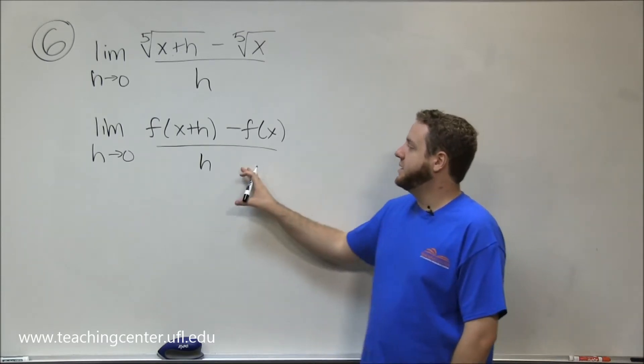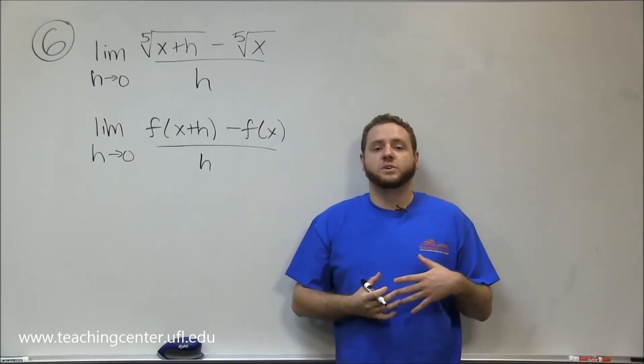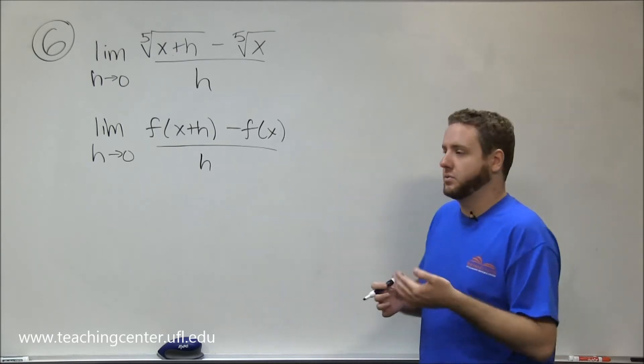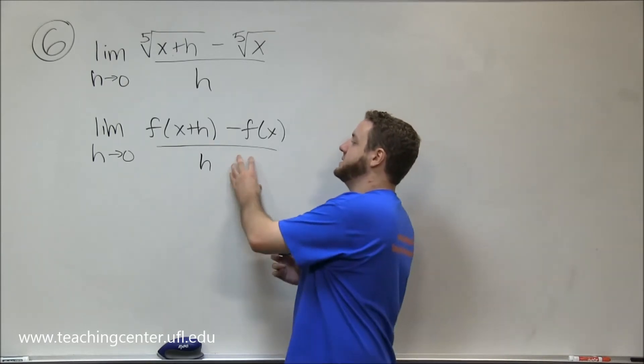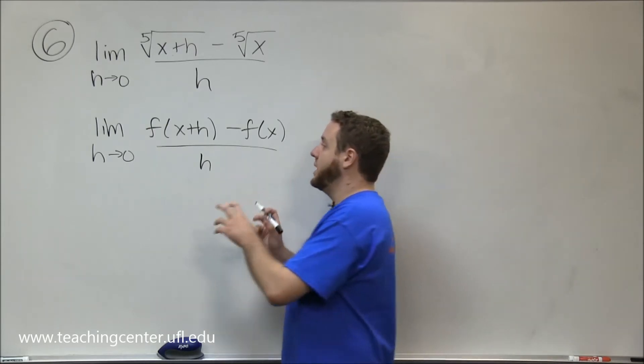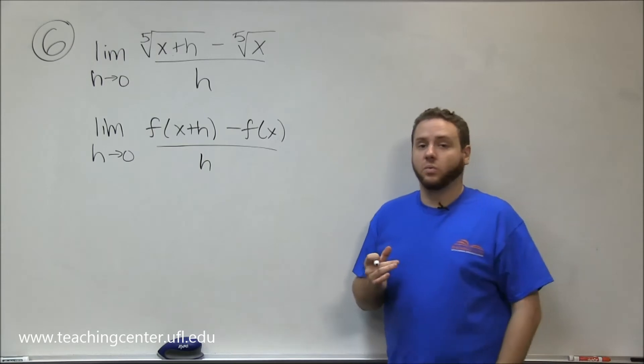So remember that the limit definition of the derivative, this is the way of finding the derivative using the limit definition, which simplifies to our other derivative rules that are easier, power rule, product rule, chain rule. But this is essentially the core way of actually finding the derivative of anything using the limit definition, the pure way.